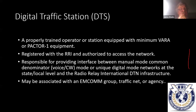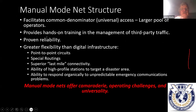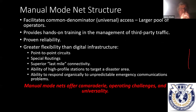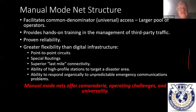Ideally there should be redundancy — two or three people trained, familiarized, and whitelisted to access our networks. They're responsible for the interface between manual mode networks or unique digital networks at the state or local level and the RRI Digital Traffic Network. The DTN topology operates in much the same manner as the manual mode net structure — a hybrid between the old ARRL National Traffic System and RRI.